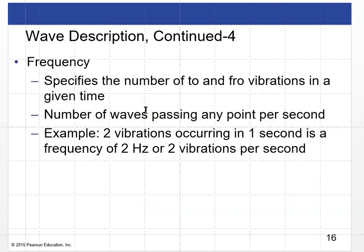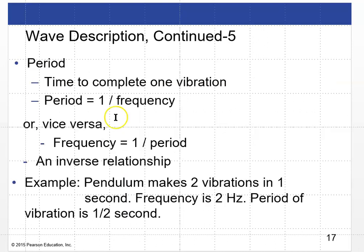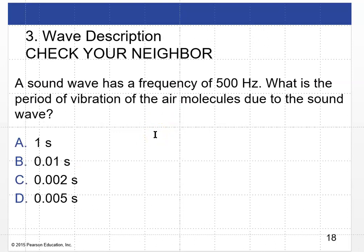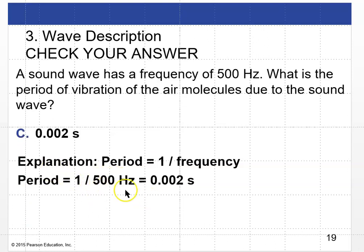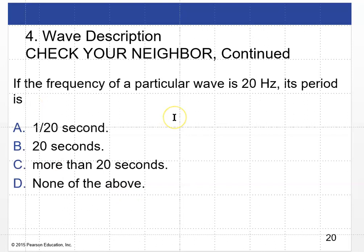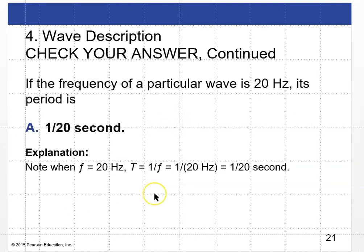Frequency specifies the number of to-and-fro vibrations in a given time — the number of complete cycles per second, or the number of waves passing any point per second. Two vibrations in one second is a frequency of 2 hertz. The period is the time to complete one vibration: period equals one over frequency, or frequency equals one over period. A pendulum making two vibrations per second has a frequency of 2 Hz and a period of 0.5 seconds. A 500 Hz sound wave has a period of 1/500 or 0.002 seconds.